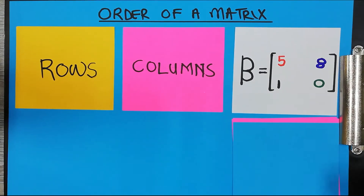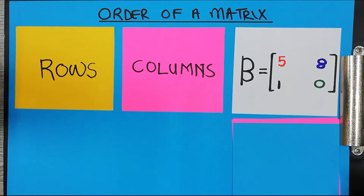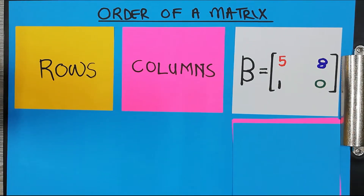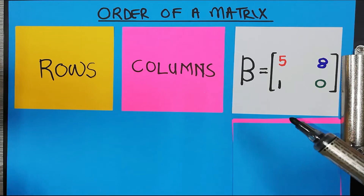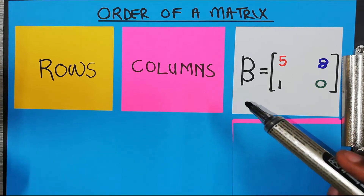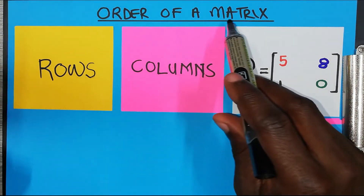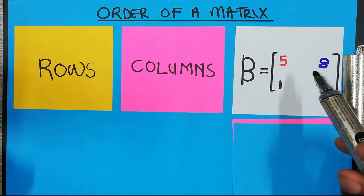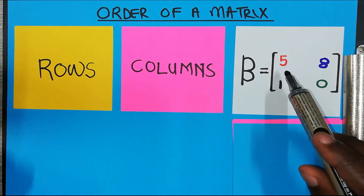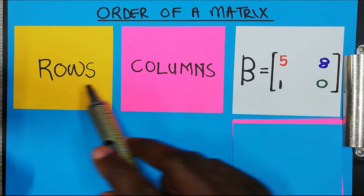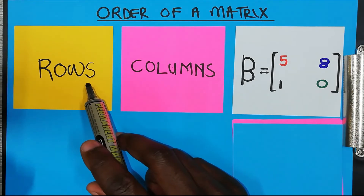Welcome to Play Techniques. If you are new to this channel, please subscribe. In today's video, we are going to discuss the order of a matrix. Any matrix is made up of the number of rows and the number of columns.